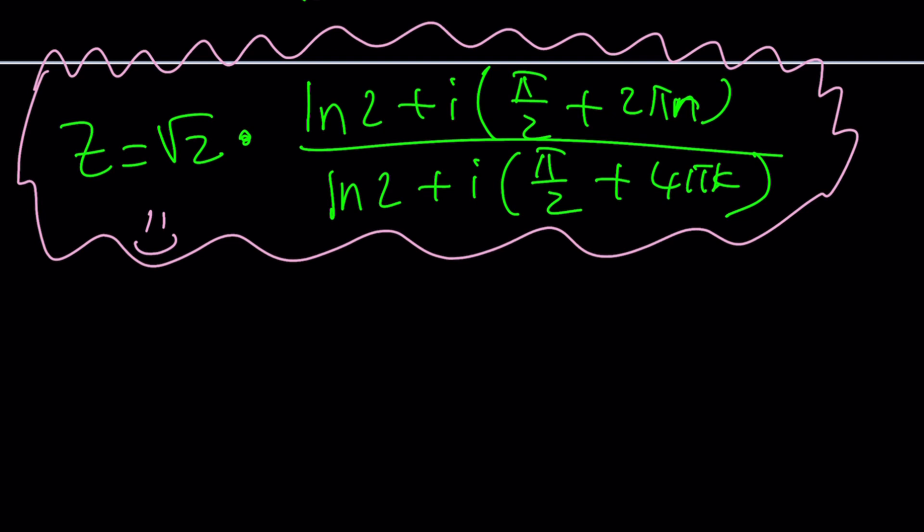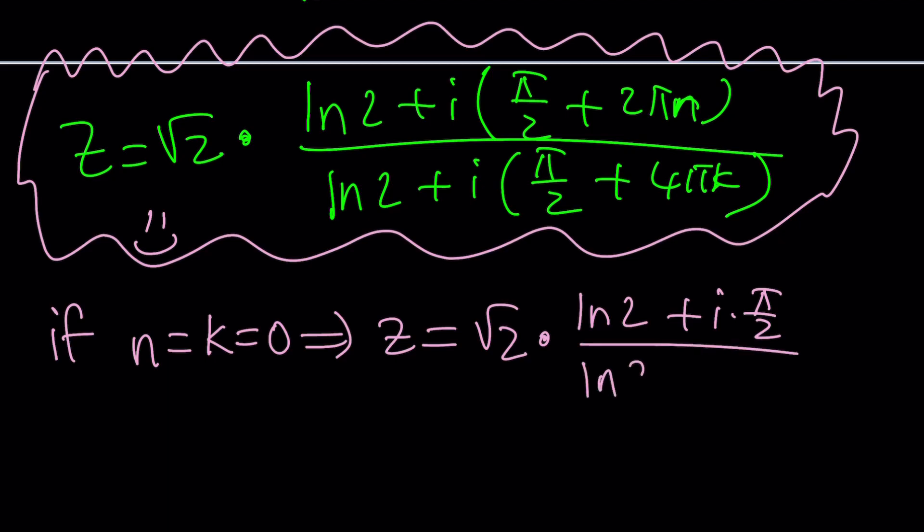If n and k are both 0, oversimplifying this stuff, we're going to get the following. Root 2 times ln 2 plus i times pi over 2, which are the principal values, by the way. Nothing wrong with that. ln 2 plus i times pi over 2. Uh-oh. Houston, we got a cancellation.